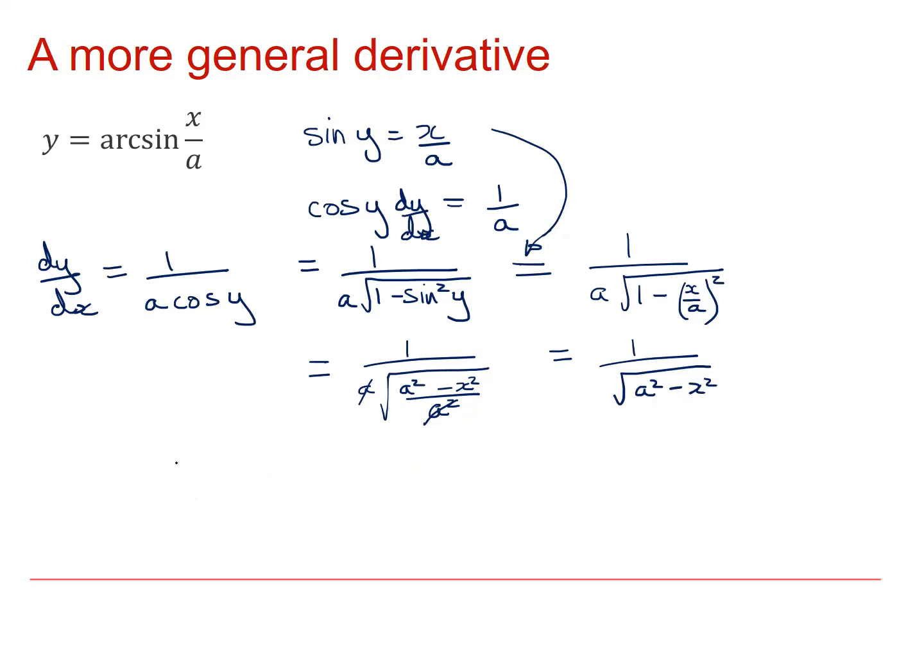And so this gives me one over square root of a squared minus x squared. And therefore, finally, I can say my derivative of arcsin x over a is equal to one over the square root of a squared minus x squared.